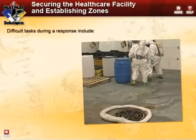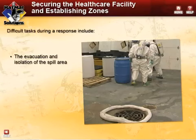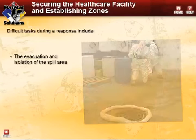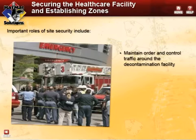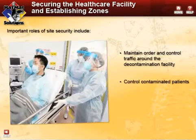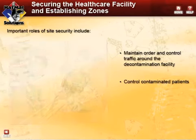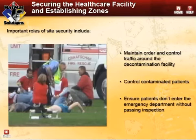The most neglected function in a response to a chemical release inside a hospital is the evacuation and isolation of the spill area from employees and bystanders. Likewise, it is a challenge for even the largest facilities to establish the decontamination and treatment areas and effectively secure those areas from unauthorized personnel. Site security helps maintain order and control traffic around the decontamination facility and the hospital entrances. Security officers might need to control a contaminated individual to prevent other staff from being exposed and to protect equipment. Security officers also ensure contaminated victims do not bypass the decontamination corridor or enter the emergency department without passing inspection.